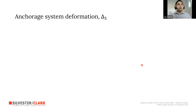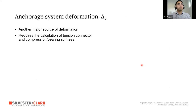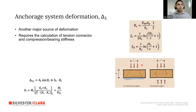Delta 5, the anchorage system deformation, can also be a major source of deformation, especially critical in multi-story timber frame walls. It requires calculating the stiffness of the tension connector (KT) and the compression bearing stiffness (KC). Delta 5 is idealized as the wall height times the rotation at the base, where rotation equals the moment divided by rotational stiffness. The rotational stiffness expression involves LC — the distance from the compression centroid to the tension connector — combined with KT and KC.